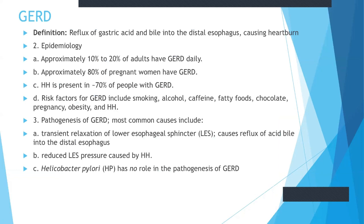Now let's talk about gastroesophageal reflux disease. Reflux of gastric acid and bile into the distal esophagus causing heartburn is GERD. It occurs in approximately 10 to 20 percent of adults, and approximately 80 percent of pregnant women have GERD. Risk factors include smoking, alcohol, caffeine, fatty foods, chocolate, pregnancy, and obesity. The most common cause is transient relaxation of the lower esophageal sphincter, which causes reflux of acid and bile into the distal esophagus. Reduced LES pressure can also cause acid reflux.